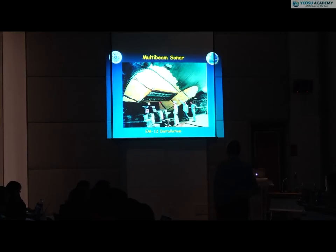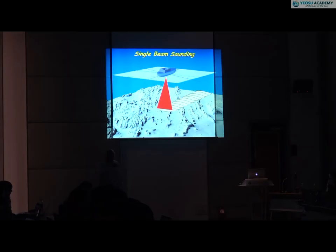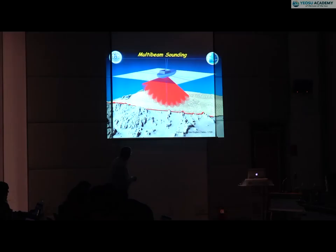It's called multi-beam because instead of just one measurement, you electronically create hundreds across the swath all at once — 100, 200, 300, up to 1,024 measurements across a 20-kilometer swath, all very accurate. This has radically changed the way you look at the sea floor. We've gone from that big blurry circular footprint on the seafloor to now hundreds of individual, very accurate depth measurements spread across a wide swath.